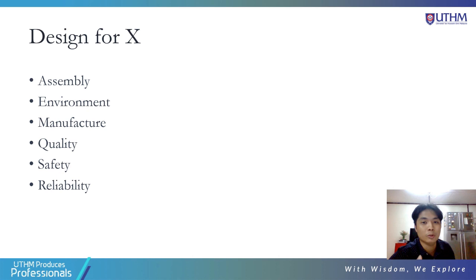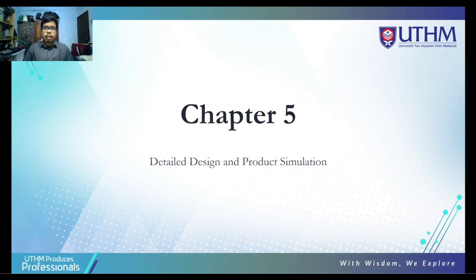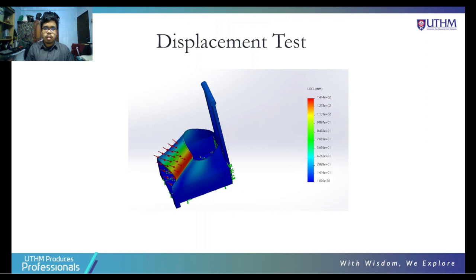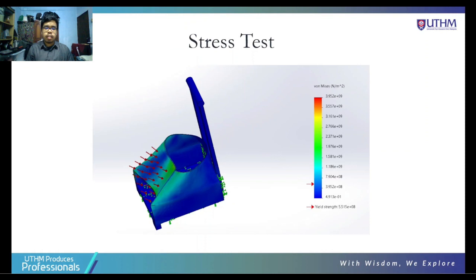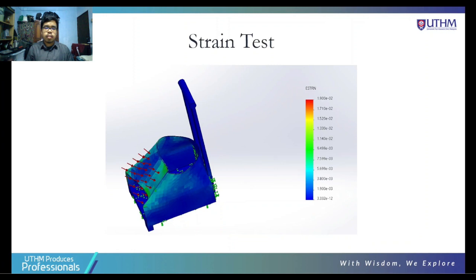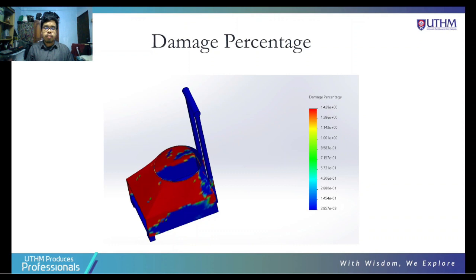Hello, Doctor. My name is Priyanta Pereira and I will be explaining chapter 5: detailed design and product simulation. We are from group MECA Transmission. Here is the displacement test on our portable ball cleaner machine — you can see the values on the right. This is the stress test we conducted as well, showing the Von Mises stress, with the yield strength at 5.515 times 10 to the power of 8. Here is the strain test, with arrows showing the strain applied on our machine. Next is the damage percentage test, where the red area indicates areas highly prone to damage. Lastly, here is the life cycle test we conducted.